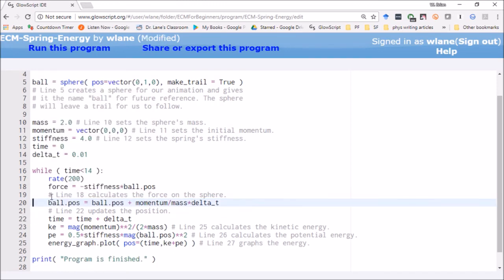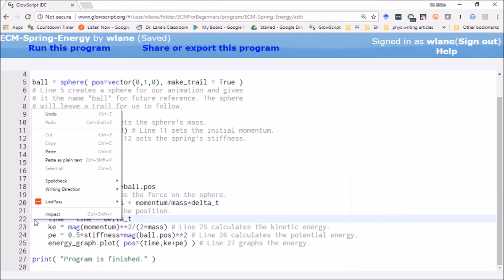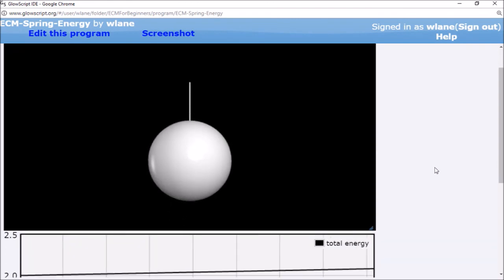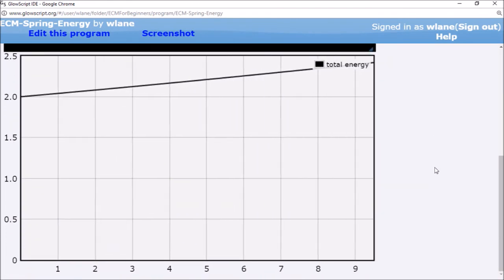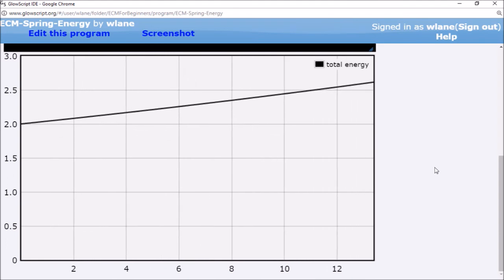Swapping these two lines in the code causes the energy to increase uncontrollably no matter how small you make the step size. So that's why it's important to specify that we use the Euler-Cromer method and not the original Euler method.